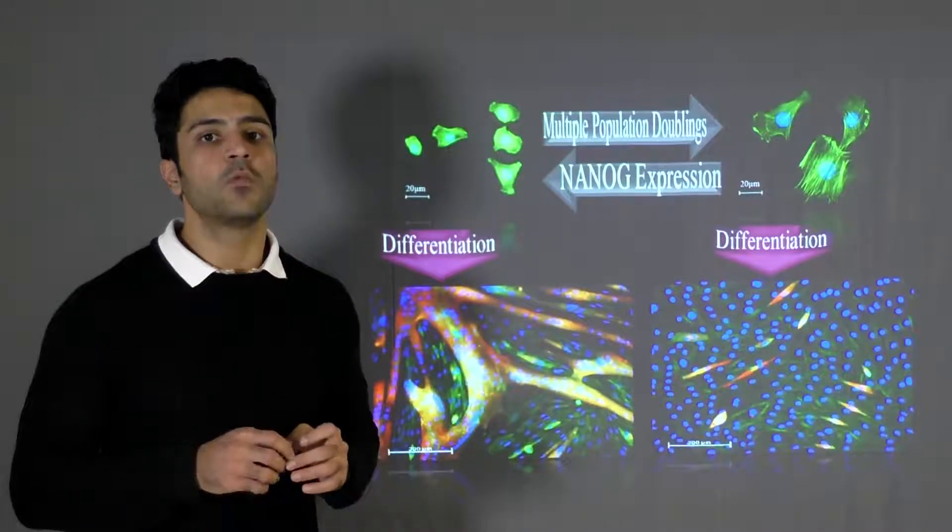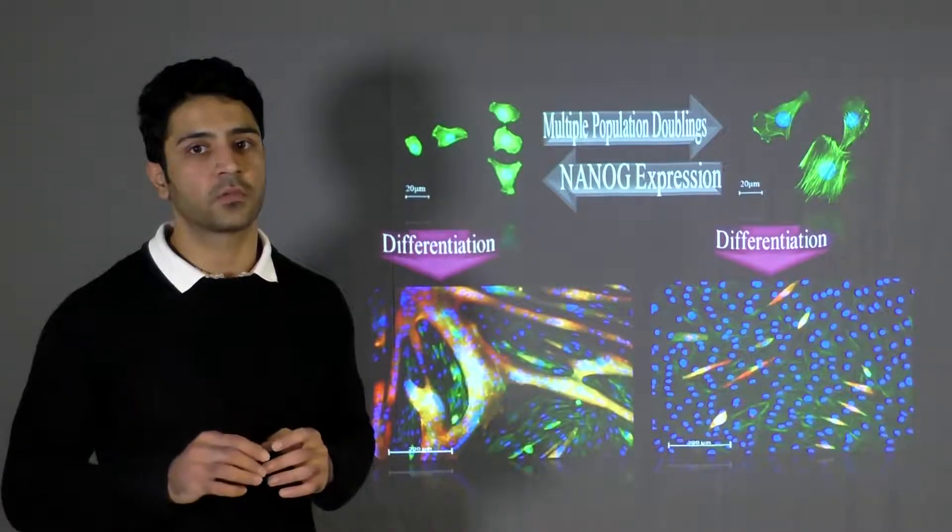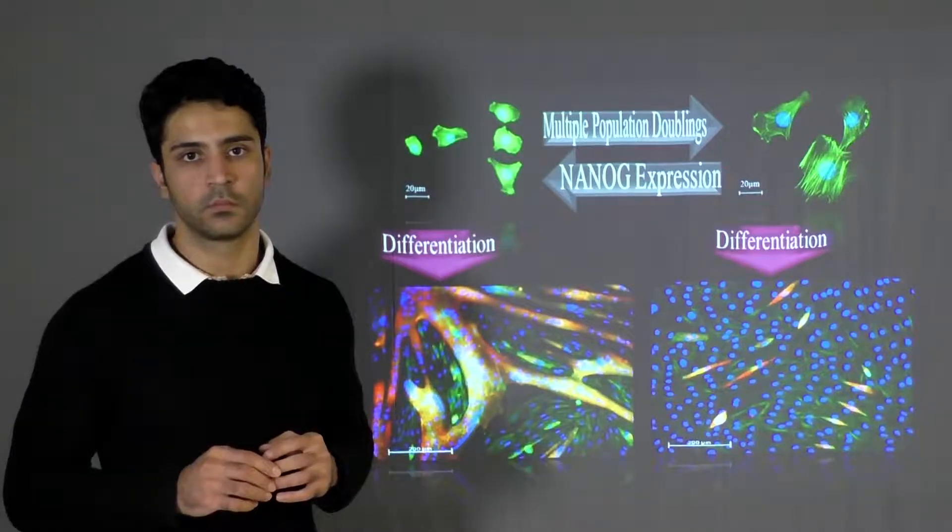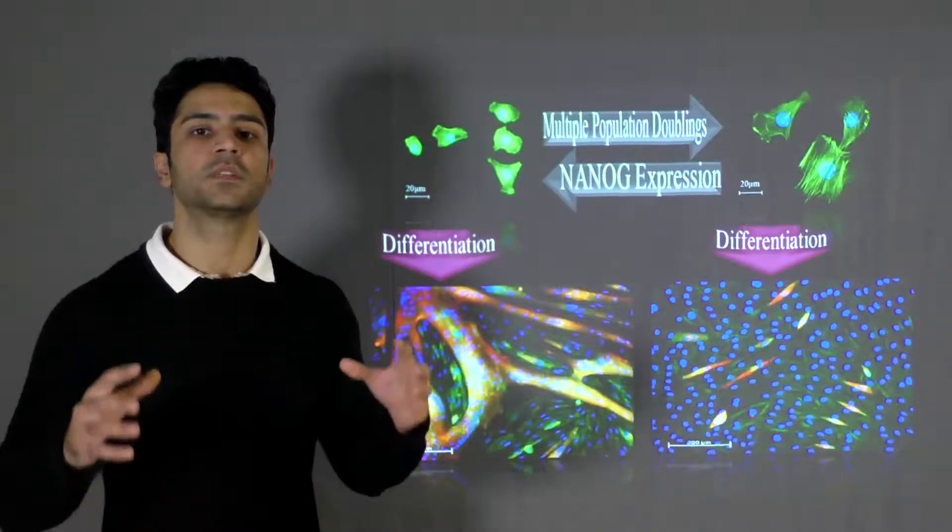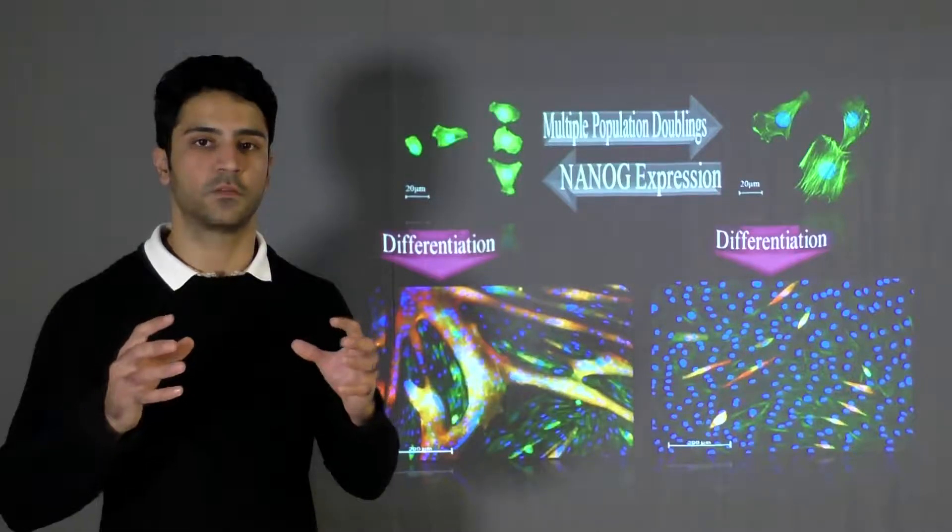To restore the regenerative capacity of old stem cells, we employ an embryonic transcription factor called NANOG. The expression of NANOG is active in the first stages of life when the embryo is forming.